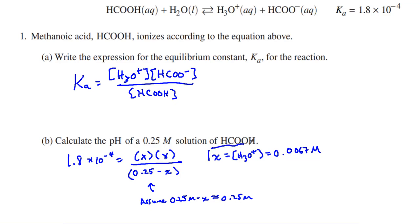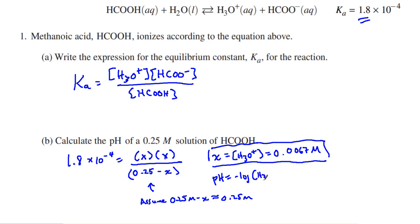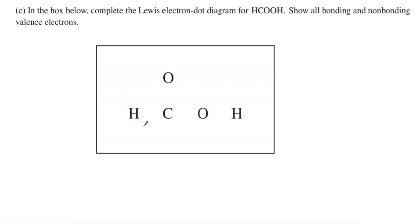Always put what X is assigned to and its units. Rounding to two significant digits, since there are two significant figures in the problem. Then to find pH: pH equals the negative log of H3O+, so we take the negative log of our X value and get a pH of 2.17. We always take pH to two decimal places, because that's what all pH meters round to. That answers parts A and B.